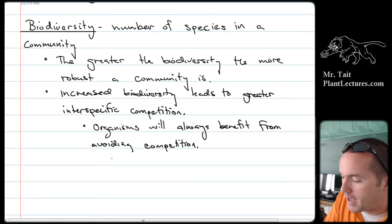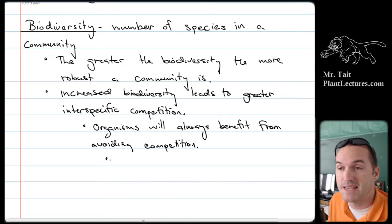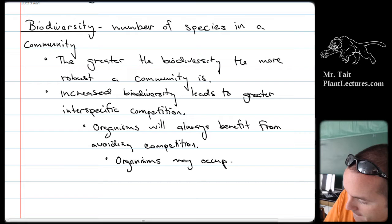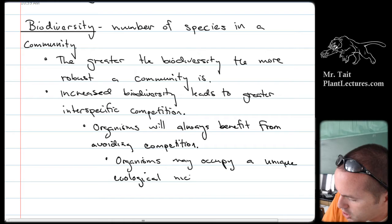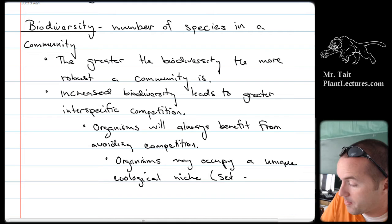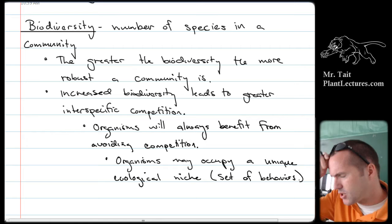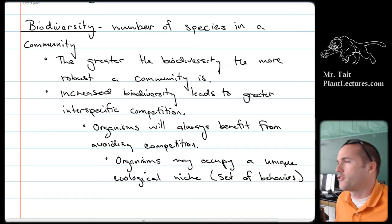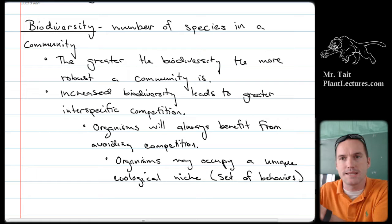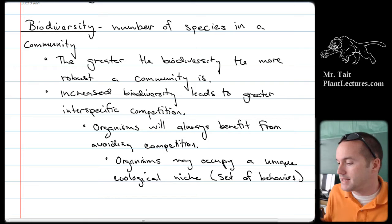The way organisms avoid competition is by occupying what we call an ecological niche. If an organism occupies a unique niche, that allows it to avoid competition. A niche is essentially a set of behaviors — where does it live, how does it act, does it hunt in the daytime or nighttime, does it hunt on the riverbed, burrow into the ground, or peck at tree bark for insects? That's how we define something's ecological niche.